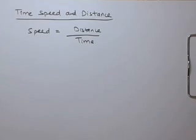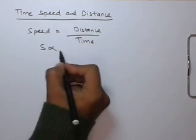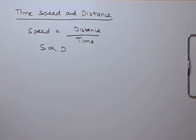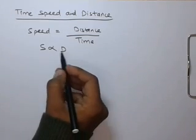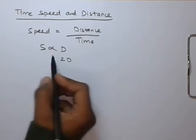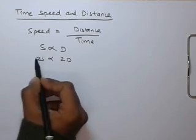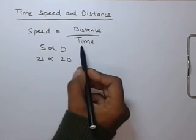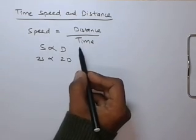The speed here we can see is directly proportional to distance. Thus if twice the distance is covered in the same time, we have to double up the speed. So if you double the distance, we have to double the speed to reach the destination in the same time.